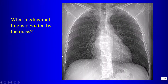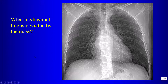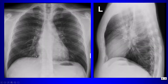Starting with a case: what mediastinal line is deviated by this mass? On the left side we have the left paraspinal line, here is the descending thoracic aorta, and this line that is deviated is the azigoesophageal line. We have a subcarinal lesion producing deviation of the azigoesophageal line, which in our radiologic scheme indicates a middle mediastinal mass.